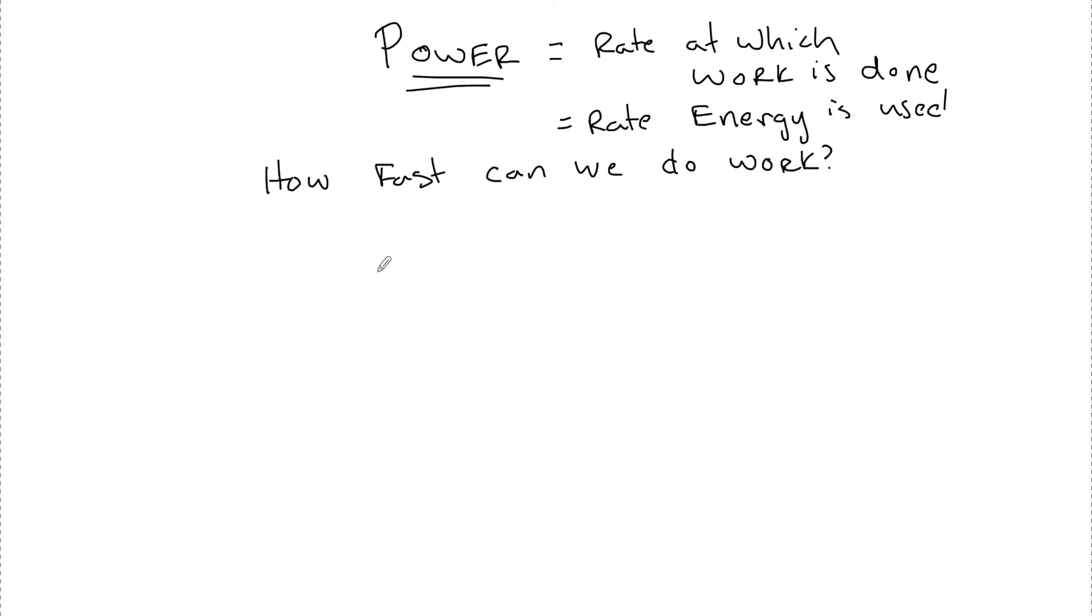And pretty much this says if I have person one and I have person two, and let's say they each do a thousand joules of work. So the work is equal to one thousand joules for each of these people. Person one does one thousand joules of work, and so does person two. But person one does it in t equal to 120 seconds.